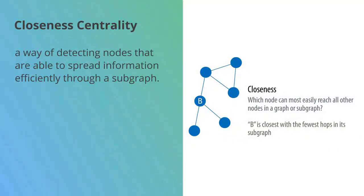The next one is closeness centrality. Here it's a way of detecting nodes that are able to spread information efficiently through a subgraph.